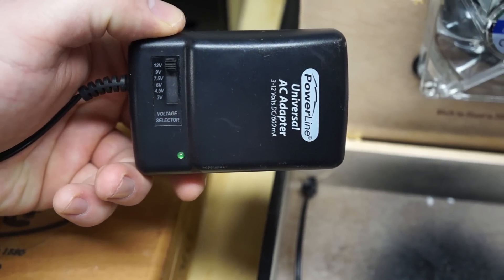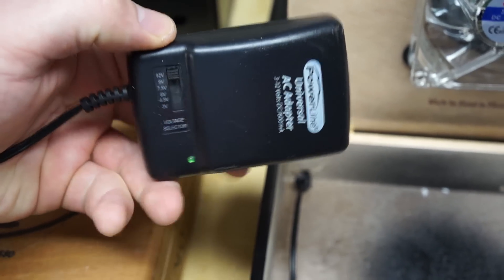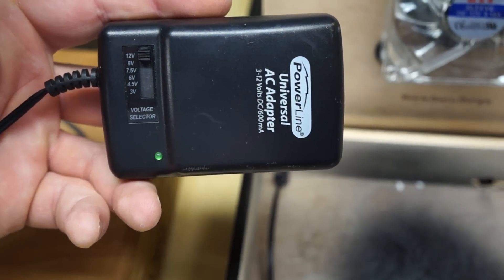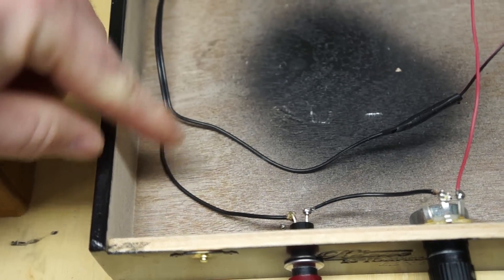You're gonna use an AC adapter. I prefer the universals because I can adjust the voltage on them. You can also use a cell phone charger plug. You want to take that and splice it—you're gonna splice it to a power and a ground, and you're gonna run it through the back of your cigar box.